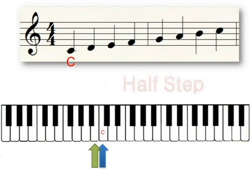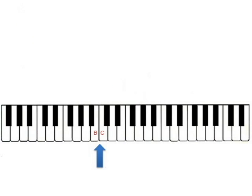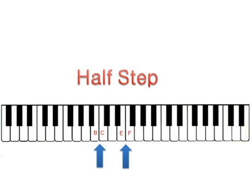If we start on the white note C and lower the pitch by one half step, we would play the white note directly to the left. You will notice there are no black keys between the pitches B and C as well as E and F. This means that the distance between B and C is a half step and the distance between E and F is a half step.